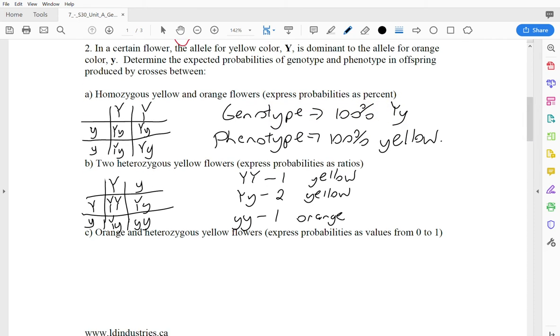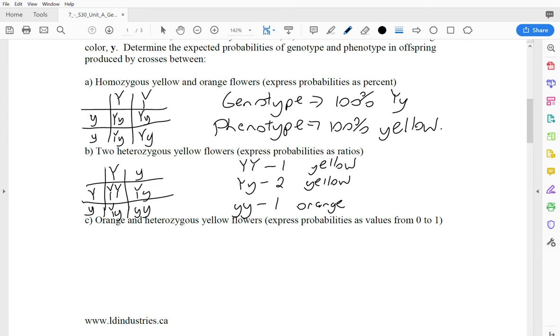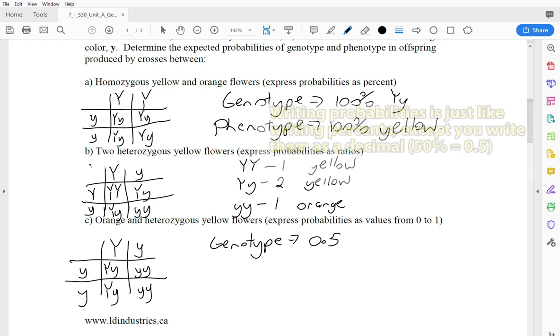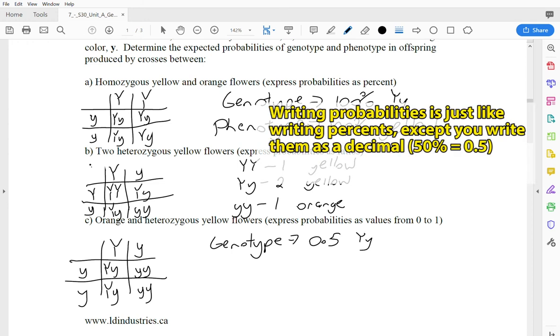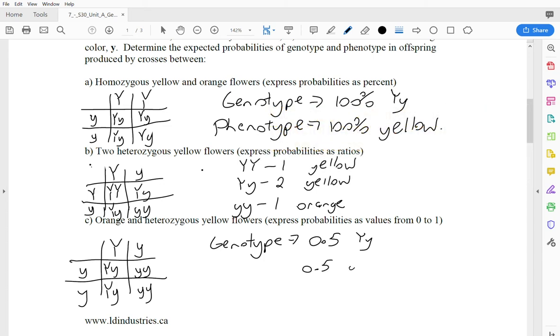So last one here. We're going to do an orange flower and a heterozygous yellow flower. And we're going to do the probabilities as just a decimal instead of a percentage, showing some different ways you can see these probabilities expressed. Lowercase Y, lowercase Y. So that's what our orange flower looks like. The only way you can get oranges with those two recessives in this question. And then uppercase Y, lowercase Y for our heterozygous yellow. Do my crosses here. Those two came out the same. And then I've got two lowercase, two lowercase. So for my genotype, it looks like half of them, so 0.5 as a probability, as a decimal, not a percentage, will be lowercase Y, uppercase Y. And 0.5 of them will be lowercase Y, lowercase Y.